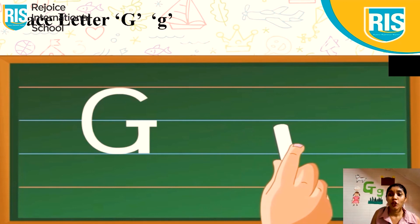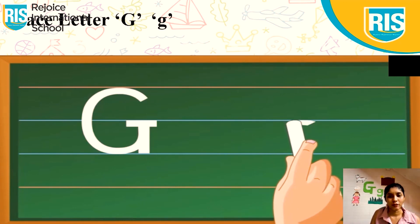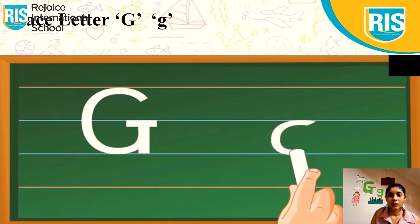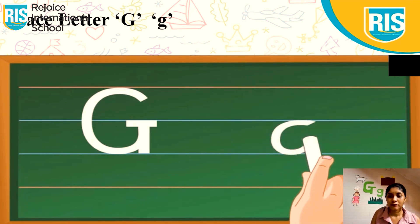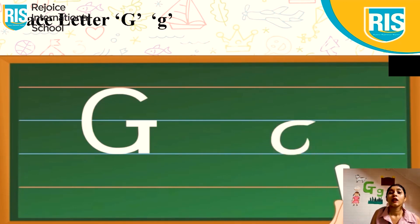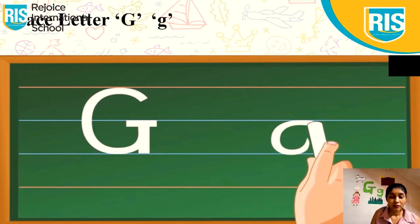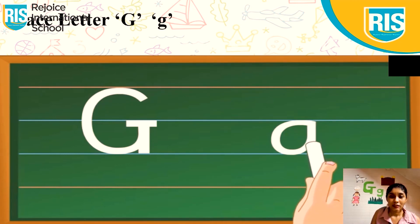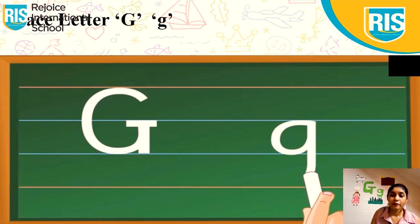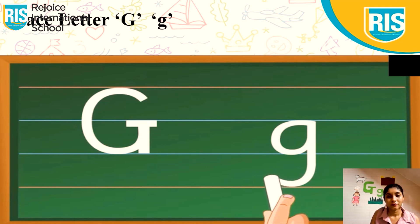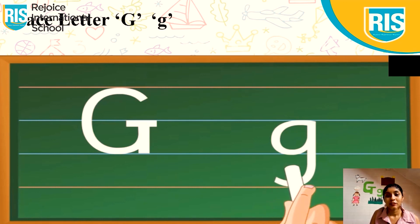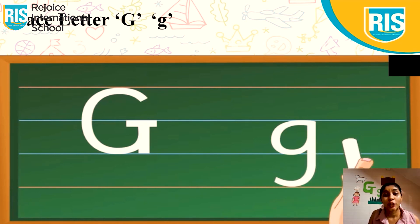Now let's do lowercase G. Make a curve, a standing line, and a curve. This is lowercase G.